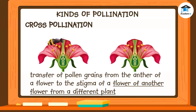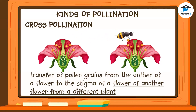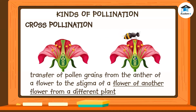For example: pollen from a stamen sticks to a bee as it visits a flower to collect food. Then the bee travels to another plant of the same type, and the pollen on the bee sticks to the pistil of a flower on the other plant — this is cross-pollination.